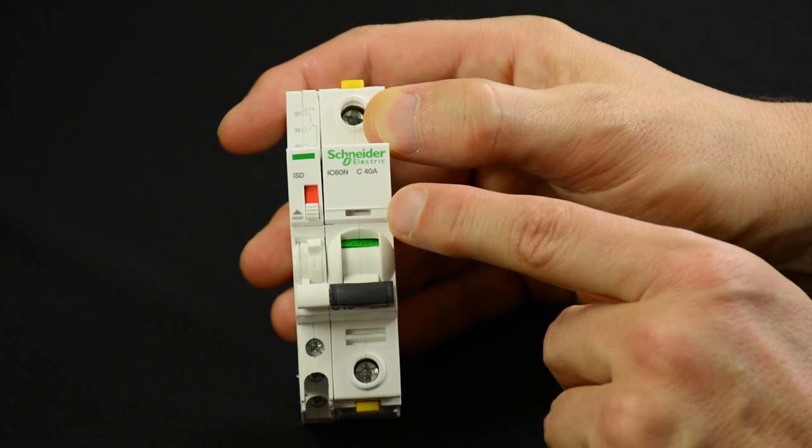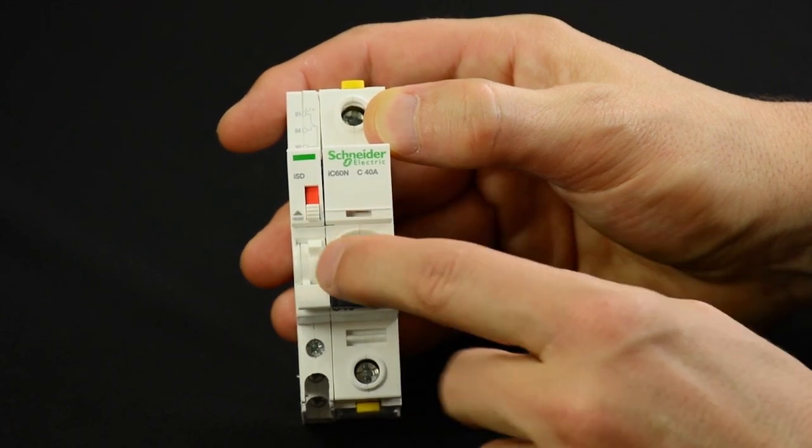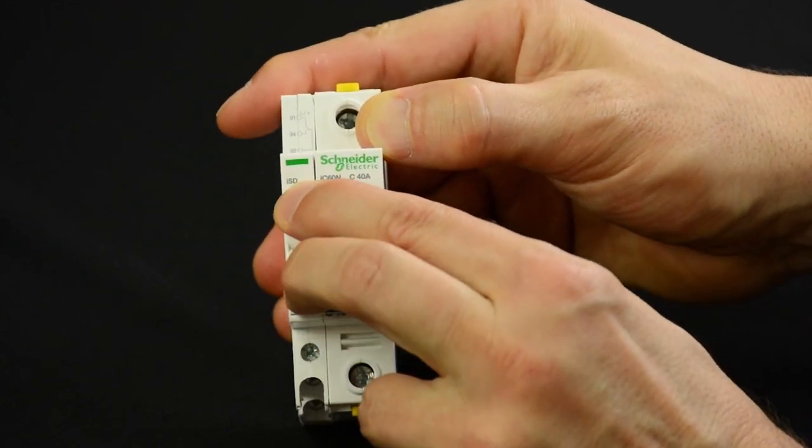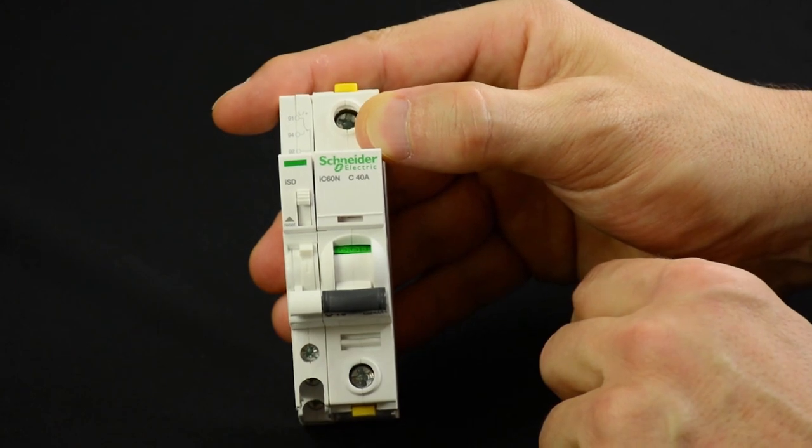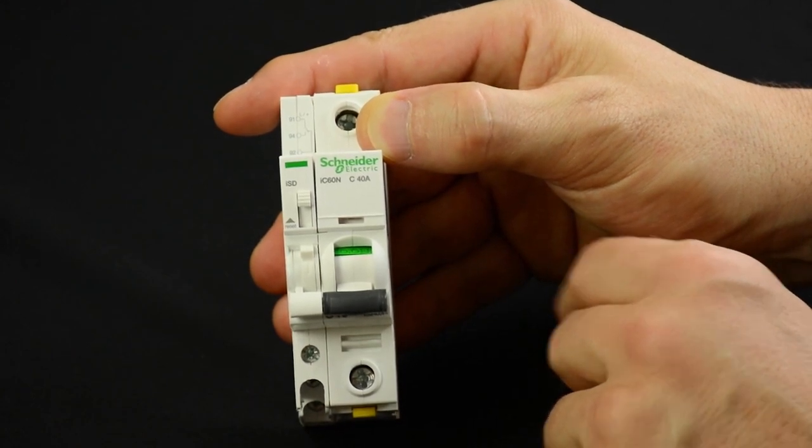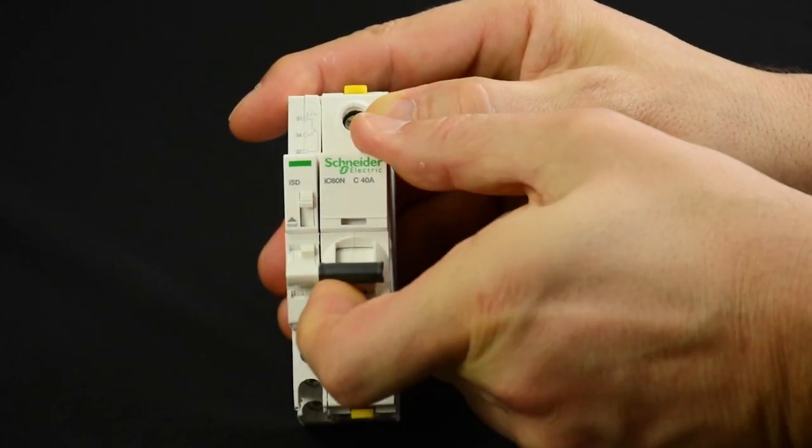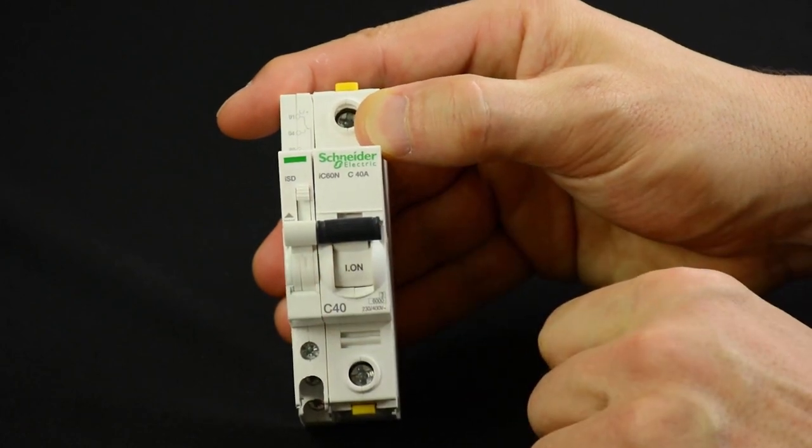Once the fault has been cleared, push upwards the reset button. Note that the circuit breaker is still open. Close the circuit breaker to resume normal operation.